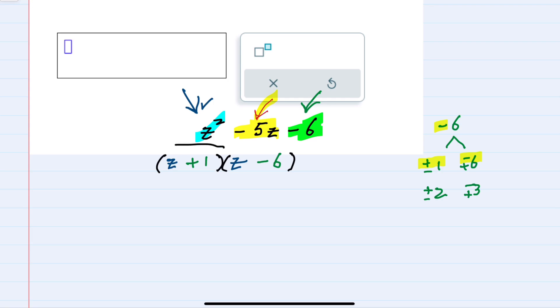The factored form of our trinomial is z plus 1 times z minus 6.